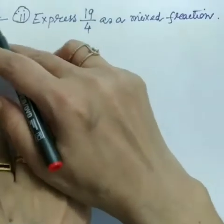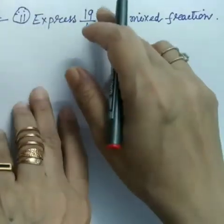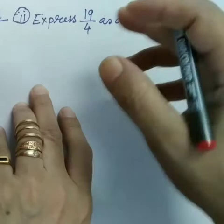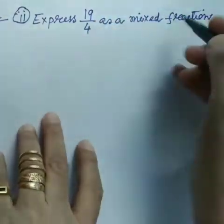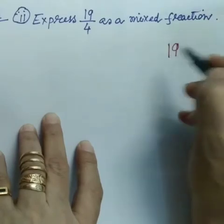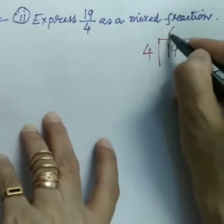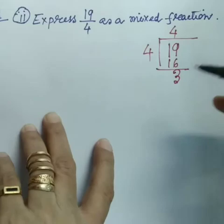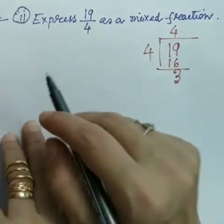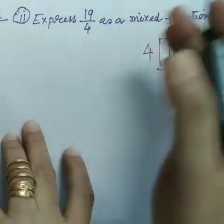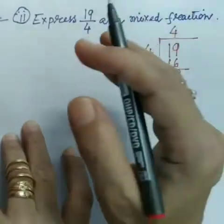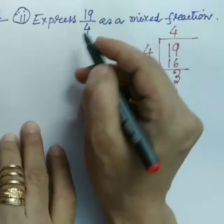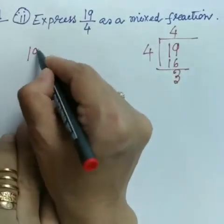Next, question number one: express 19/4 as a mixed fraction. For this we divide 19 by 4. 4 goes into 19 four times giving 16, and 19 minus 16 equals 3, so the remainder is 3. One important thing to remember: when converting between mixed and improper fractions, the denominator always remains the same — so 4 will remain the denominator.